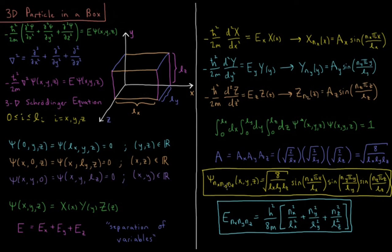So now our total wave function is the product of those three. It's our normalization constant times sine in each dimension, sine nx pi x over lx, sine ny pi y over ly, times sine nz pi times z over lz.